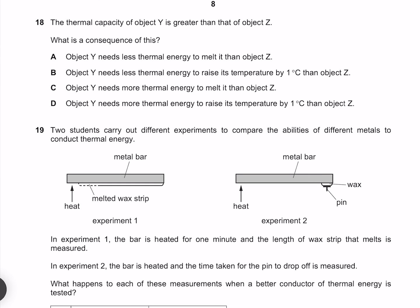The thermal capacity of object Y is greater than that of object Z. What is a consequence of this? Right away our thermal capacity has nothing to do with the melting point, so we can rule out A and C. The definition of thermal capacity is that it needs more energy to raise its temperature, which means that our answer must be D.